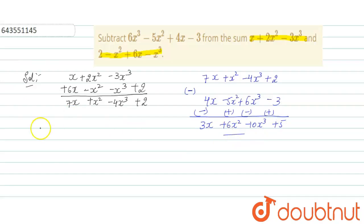So the final answer after adding and subtracting which we get will be 3x + 6x² - 10x³ + 5. Thank you.